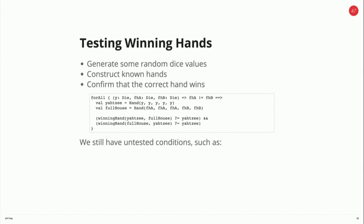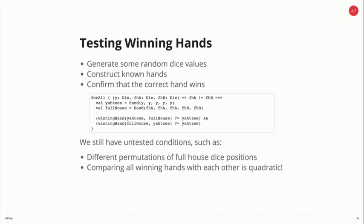We generate some hands and say, if the method is this way around, that should work, and if it's the other way around, that should work. That's a lot better — we're not using our implementation. We've got a nice rule here that says this hand should always beat this hand. However, we still have a few issues: the permutations of the dice positions are not taken into account here. Also, while this is quite a small domain, comparing all the winning hands is actually quadratic, which for poker with a lot more hands and suits would be a lot more code to write.